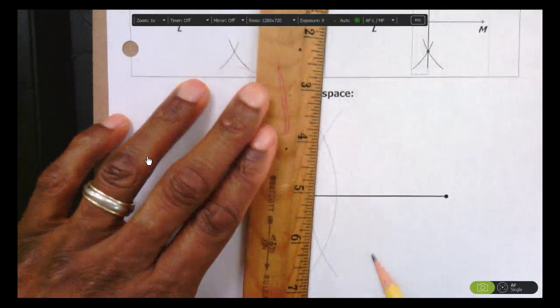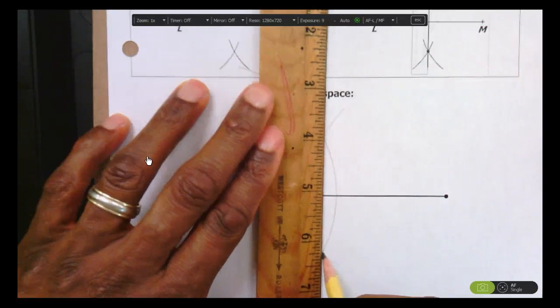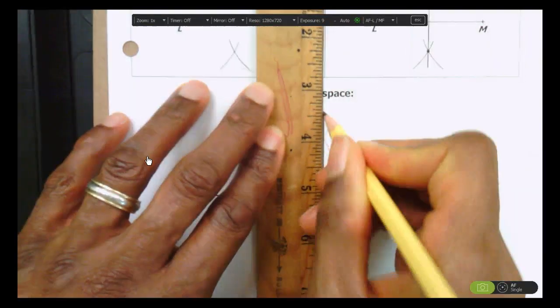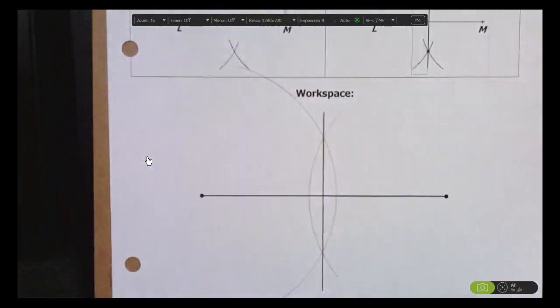So all you have to do is draw the perpendicular bisector through those intersection points like that. And boom! Perpendicular bisector.